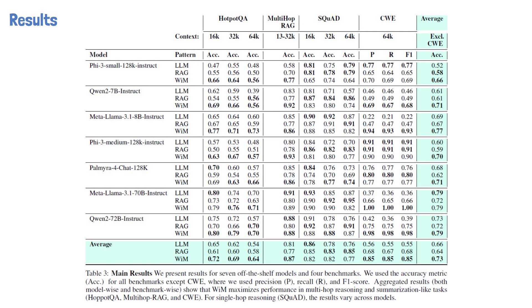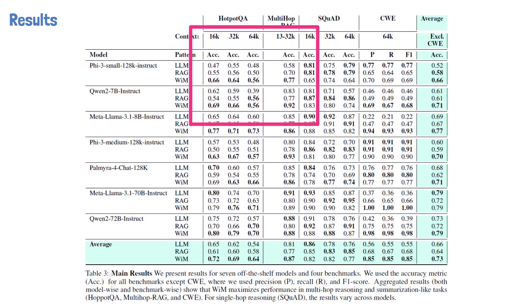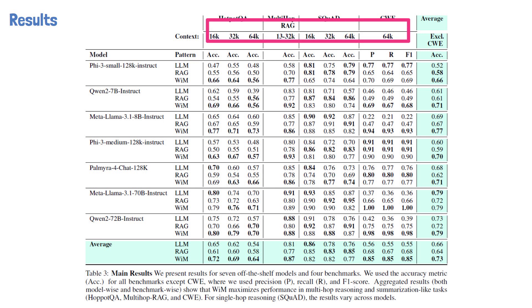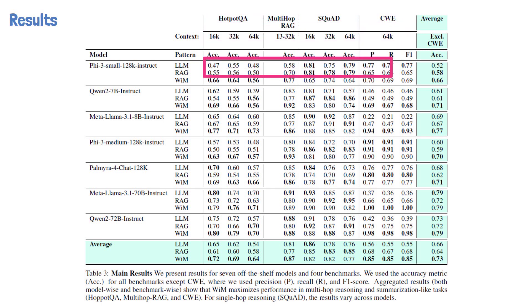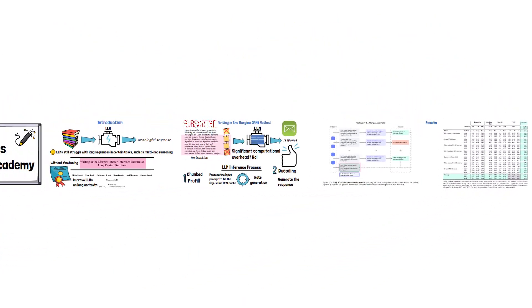Let's now move on to see the main results from the paper presented in the following table. On the left, we see the seven models that were used for evaluation, where for each one the researchers evaluated three inference patterns: standard LLM inference, retrieval augmented generation, and writing in the margins. The researchers curated datasets for four benchmarks with 100 examples per each context length. In the bottom, we have the averages for each inference method on the corresponding dataset. The first two benchmarks represent reasoning capabilities, and we can see accuracy improvement ranging between 7% to 10% comparing to standard LLM inference. For the SQuAD benchmark, there is no consistent improvement, and lastly, for the CWE benchmark which measures aggregation capabilities, we see an extreme improvement of 30%. Thank you for watching and stay tuned for more reviews of AI papers.